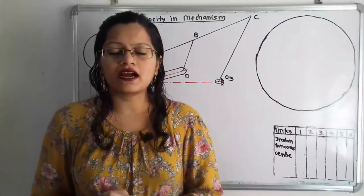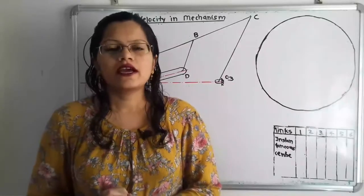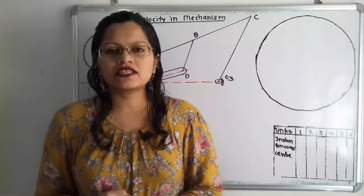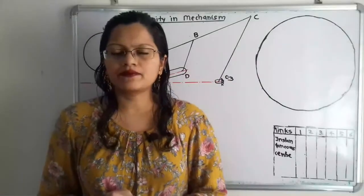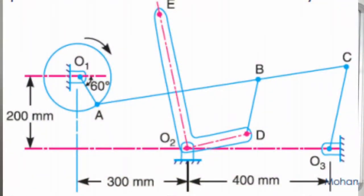Hello friends, this is Priyanka. Today we are going to solve a problem on location of instantaneous centers for a given mechanism. If we observe the diagram, some distances are given, so we have to plot first the fixed centers O1, O2, and O3 as per the given scale. The dimensions of the links are given in millimeters, so we will take a suitable scale: 100 millimeters equals 2 centimeters.